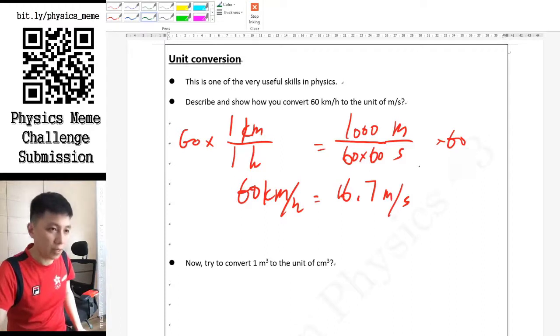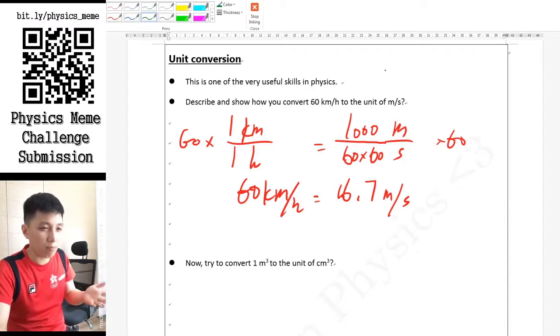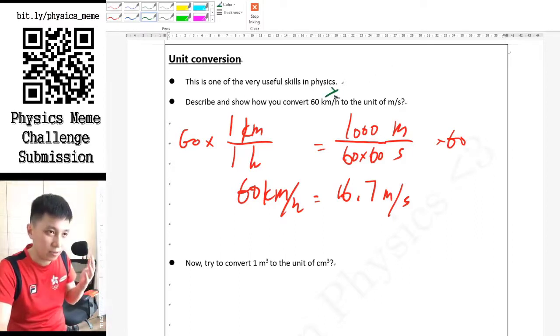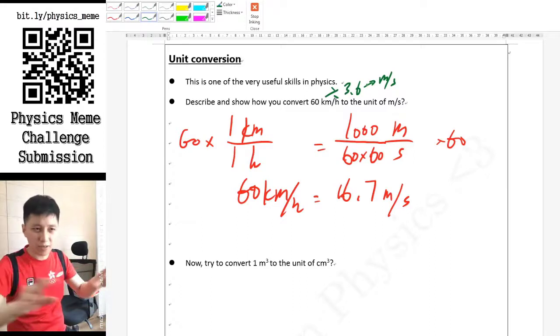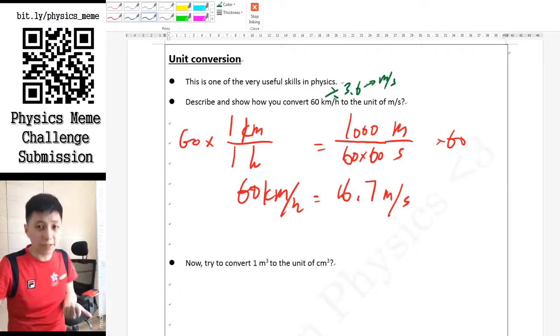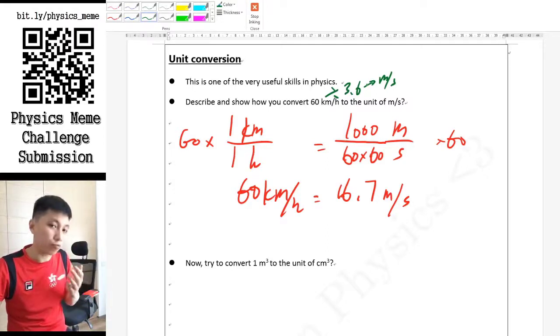Some of you may try to argue with me that hey Mr. Wang, actually I've done this many times - I remember we just have to divide the km per hour by 3.6, then you can get meter per second. Why do we bother to do such a lengthy calculation? My first reason is I personally would not like to memorize an answer. I would not want to memorize the number 3.6 first of all.